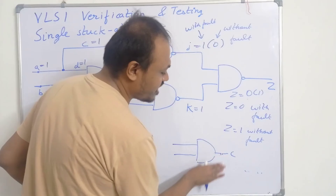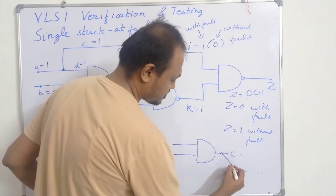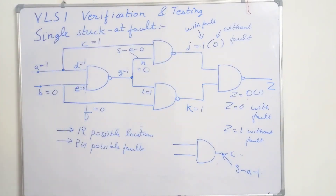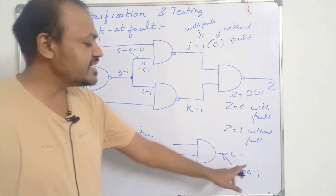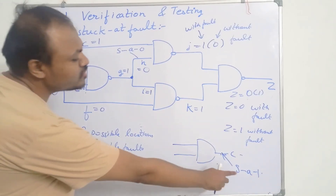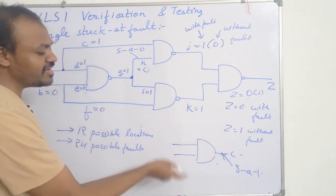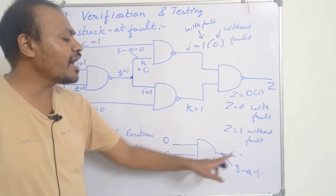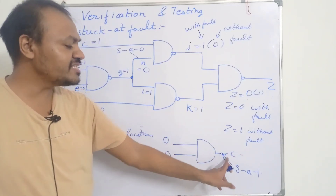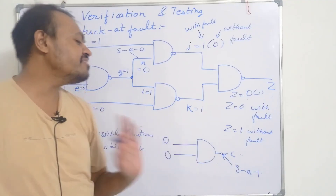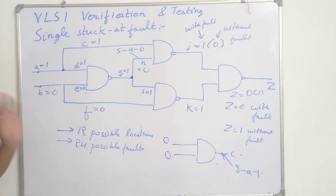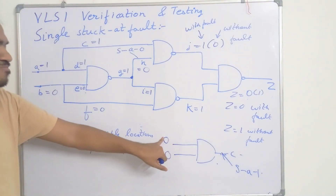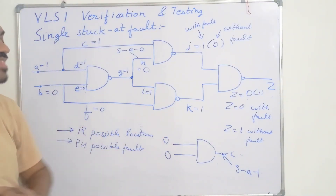On the other hand, suppose C is forever stuck at 1 — S-A-1. To test this fault, we give the input 0 and 0. When both inputs are 0, the output should be equal to 0. But if C is stuck at 1 forever, then it will not be 0. So for this stuck-at-1 fault, both inputs should be 0.